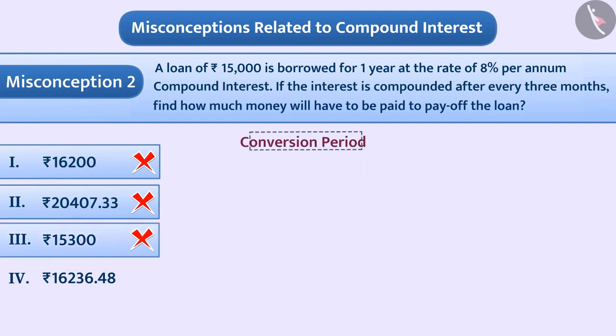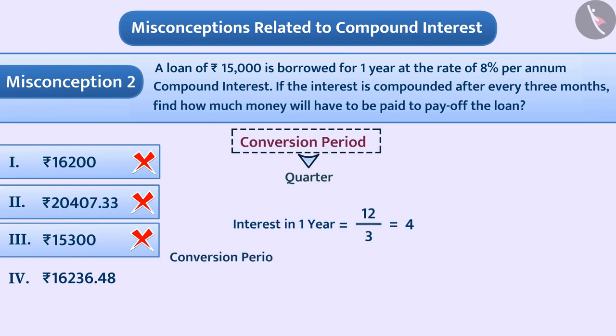The conversion period here is quarter. Since the interest will be compounded 12 by 3 equals 4 times in a year, we say that the conversion period in a given time (1 year) will be 4 multiplied by 1 equals 4. That is, we have taken n equals 4. Since interest is calculated 4 times in a year, we have to take 8% divided by 4 equals 2% for every 3 months.